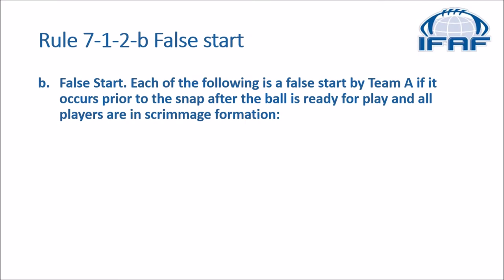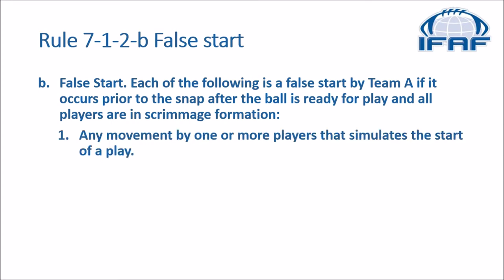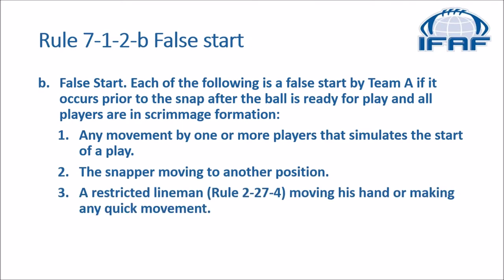In the rule book we go to rule 7-1-2 dealing with false start. Each of the following is a false start by team A if it occurs prior to the snap after the ball is ready for play and all players are in scrimmage formation. One: any movement by one or more players that simulates the start of a play. Two: the snapper moving to another position. Three: a restricted lineman according to rule 2-27-4 moving his hand or making any quick movement.